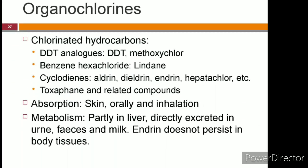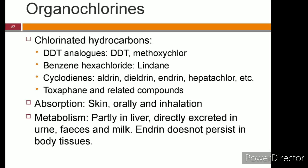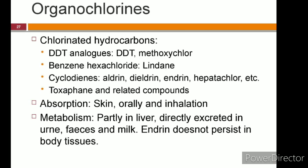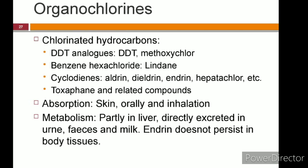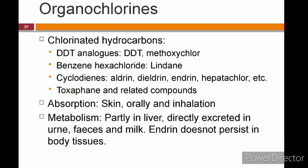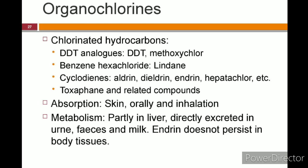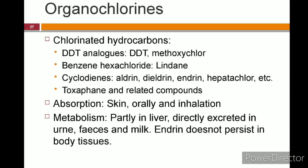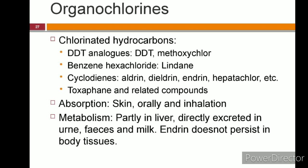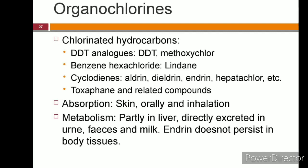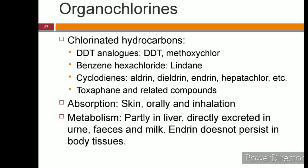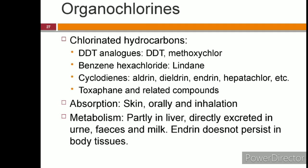The next group is organochlorine poisoning. They are chlorinated hydrocarbons divided into four categories: DDT and analogues, benzene hexachloride, cyclodiene and related compounds, and toxaphene and related compounds. Absorption is through skin, orally, or via inhalation — DDT is the least absorbed. They are partially metabolized in the liver and directly excreted in urine, feces, and milk. Aldrin is rapidly metabolized and eliminated and does not persist in body tissues.